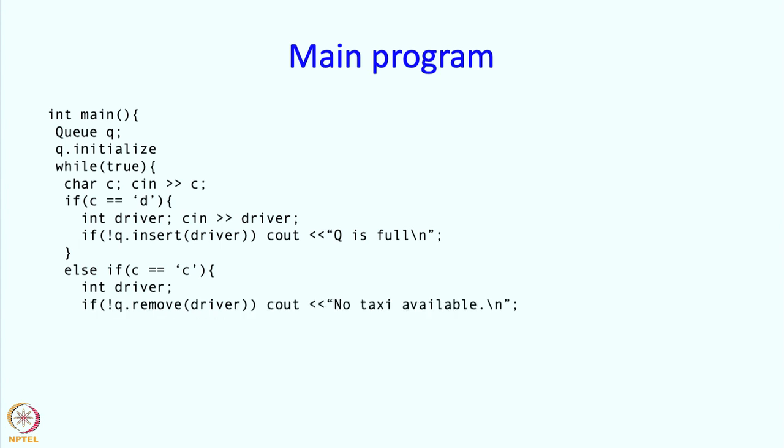If it is a C for a customer, then we're going to remove the driver from the queue. This is going to be a reference argument, so this will actually modify this driver. In this case, if there is no driver waiting, then we should print this message. If there is no space to put in the new driver, we also print a message.